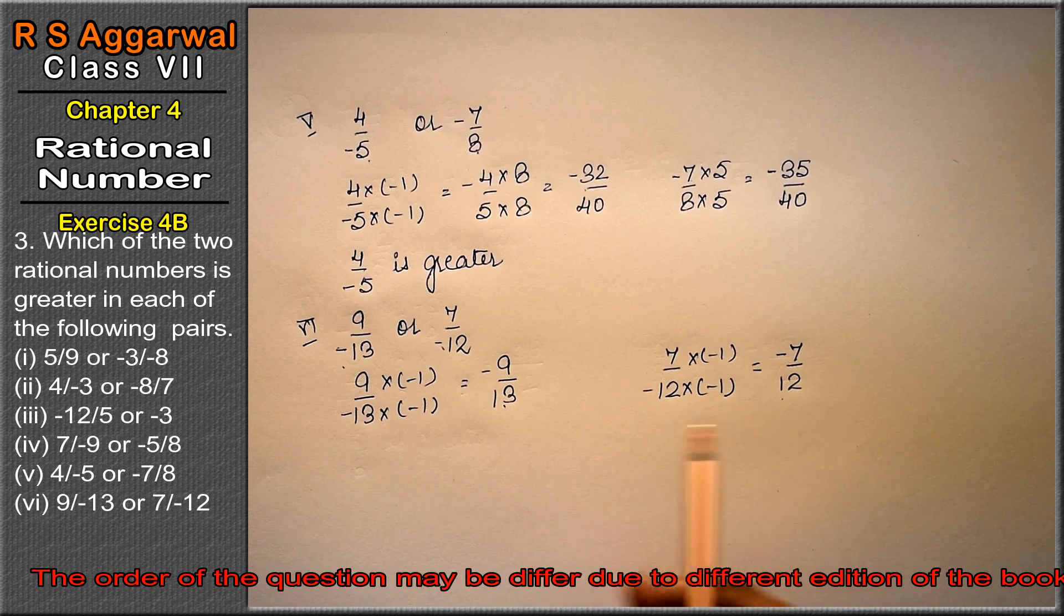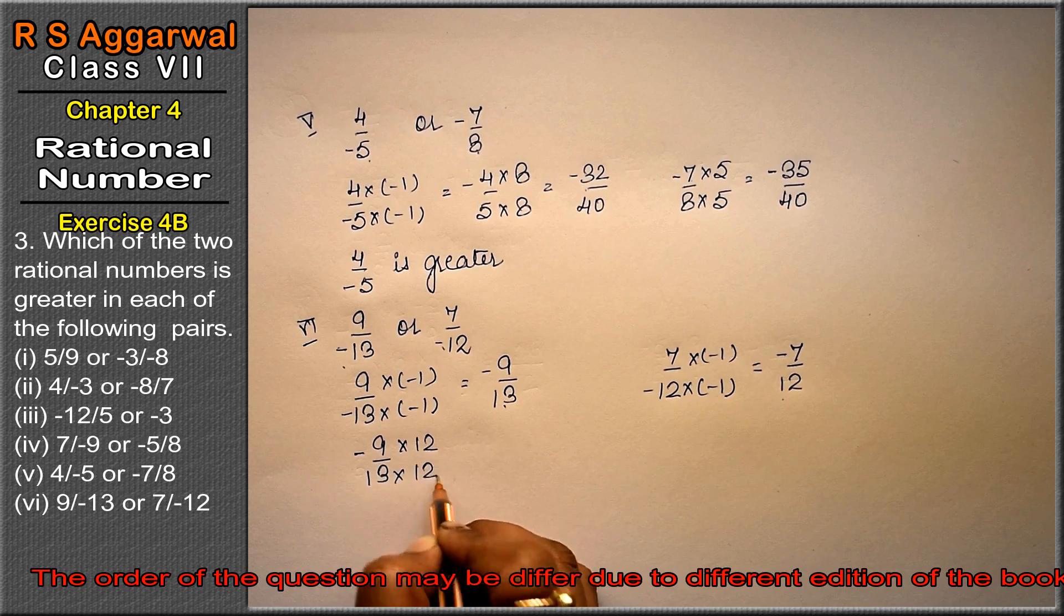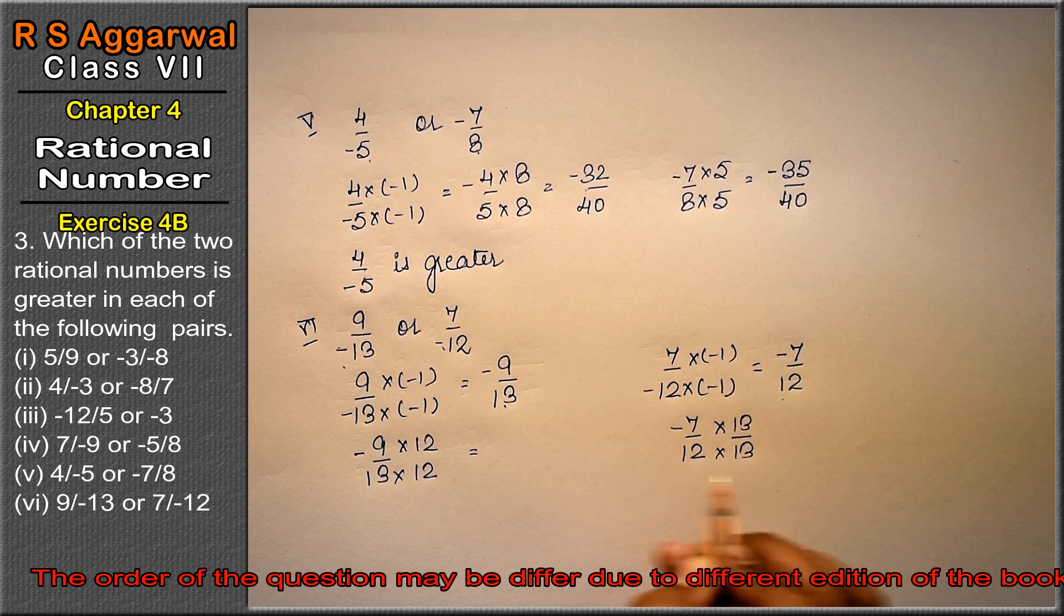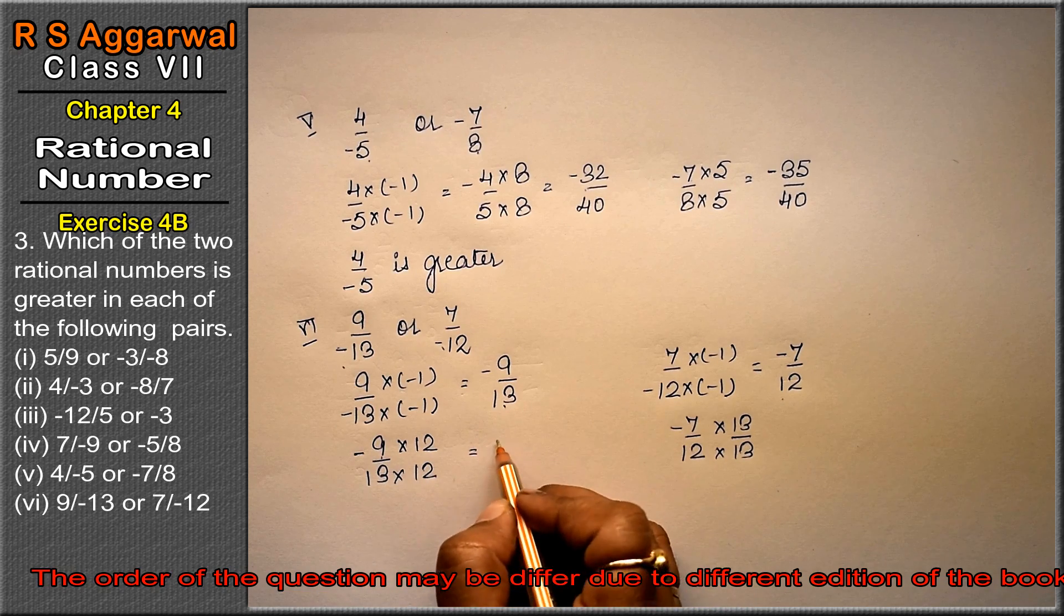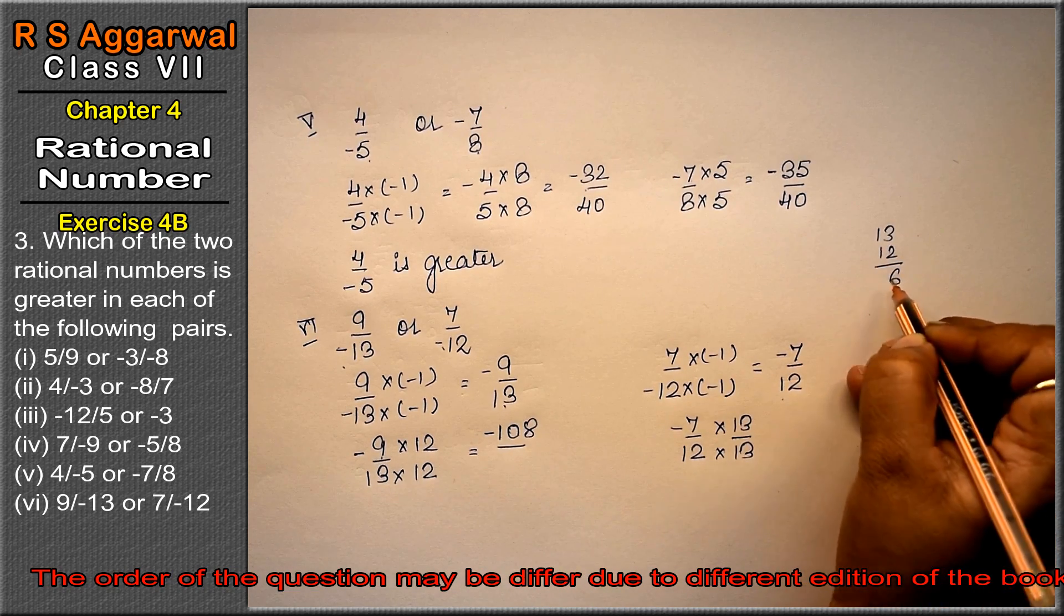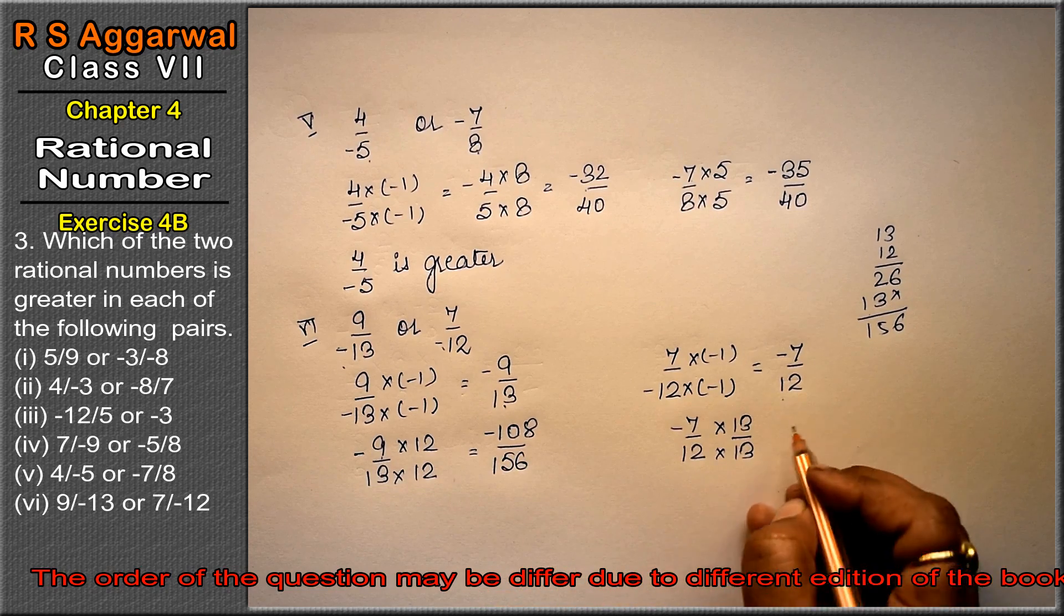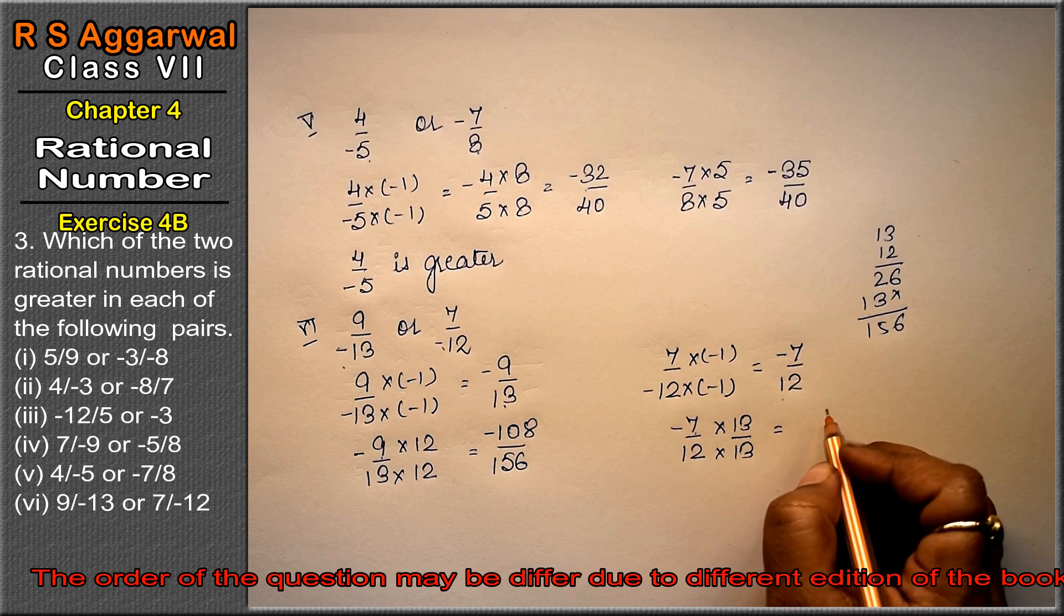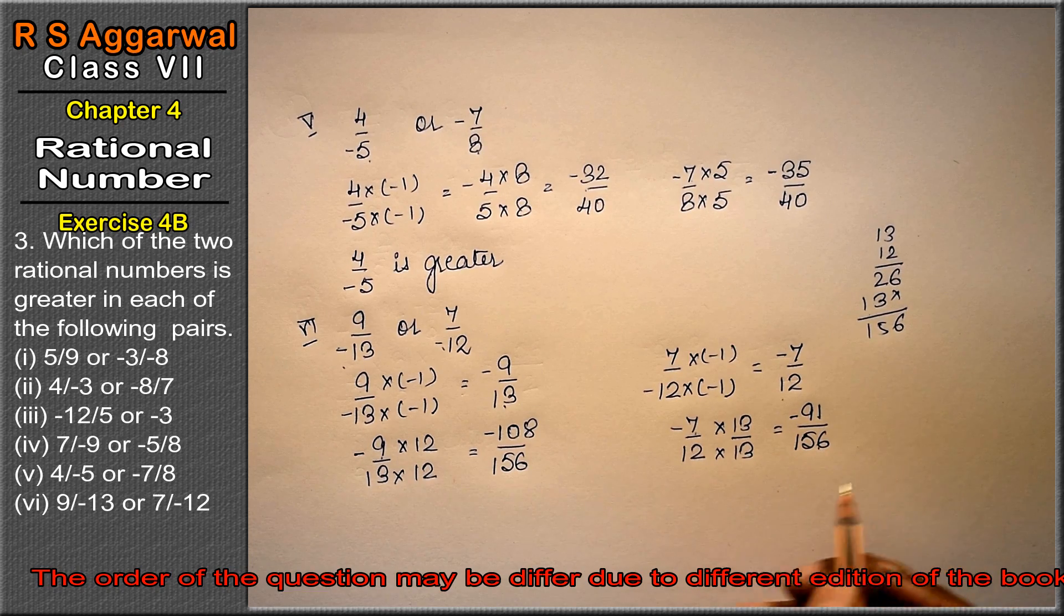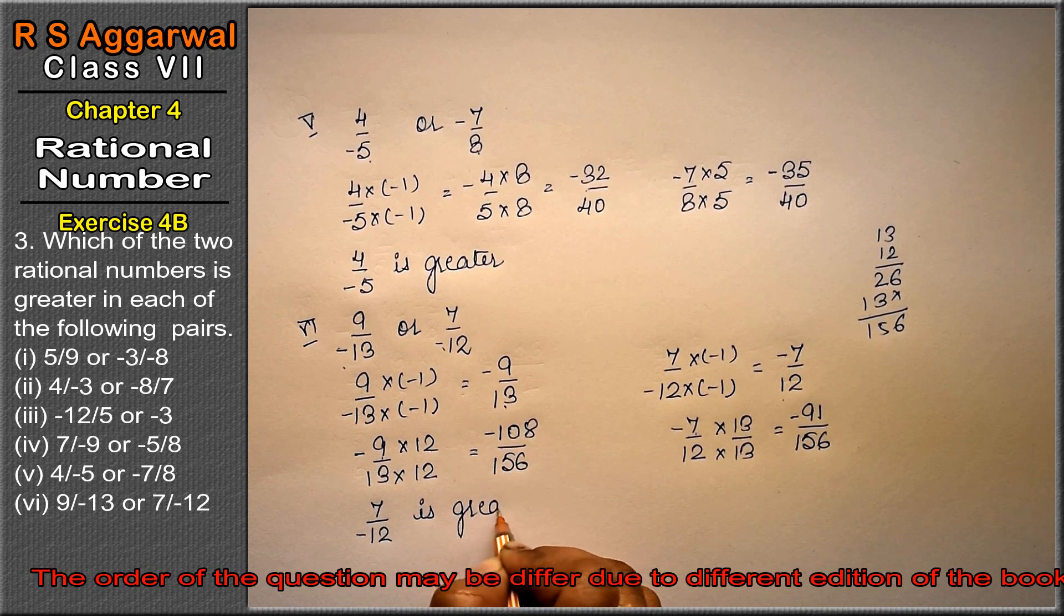Now the denominators are different, so multiply them crosswise. -9/13 times 12: 12 nines is 108, so -108/156. -7/12 times 13: 13 times 7 is 91, so -91/156. -91 is greater than -108, so 7/-12 is greater.